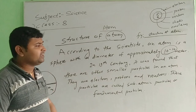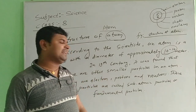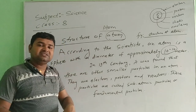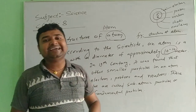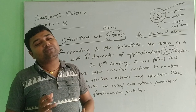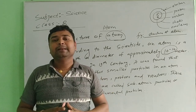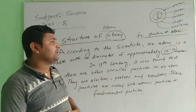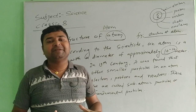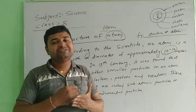In the 19th century, it was found that there are other small particles in the atom. So the atom, which was considered the smallest particle, was found to be divisible. Within that atom there are three subatomic particles, also known as fundamental particles. In the 19th century it was found that the atom is divisible — meaning electron, proton, and neutron are inside the atom.